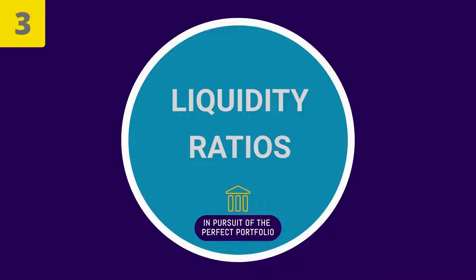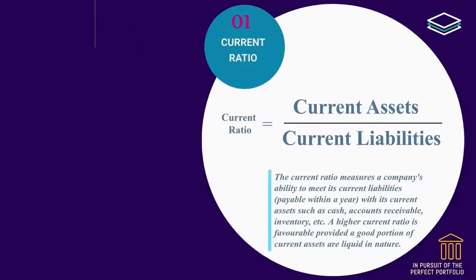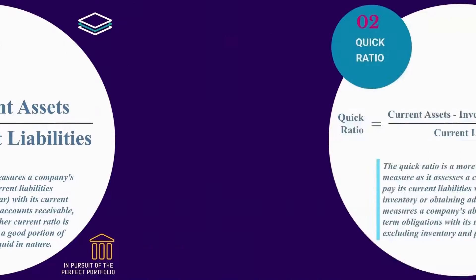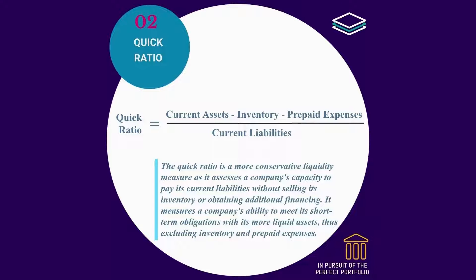Number 3: Liquidity ratios. Current ratio is equal to current assets divided by current liabilities. It measures a company's ability to meet its current liabilities, payable within a year, with its current assets such as cash, accounts receivable, and inventory. Quick ratio is equal to current assets less inventory and prepaid expenses, divided by current liabilities. The quick ratio is a more conservative liquidity measure as it assesses a company's capacity to pay its current liabilities without selling its inventory or obtaining additional financing, thus excluding inventory and prepaid expenses.